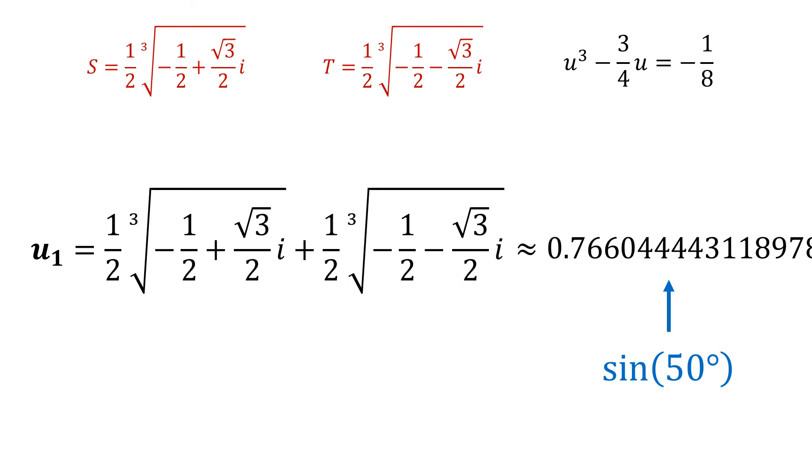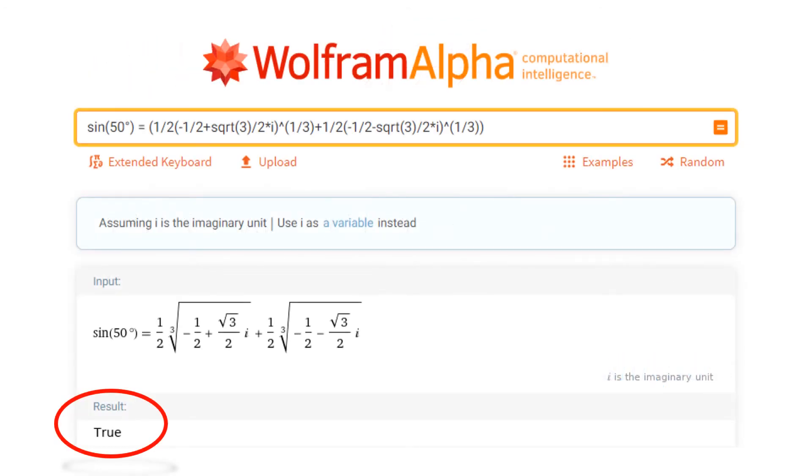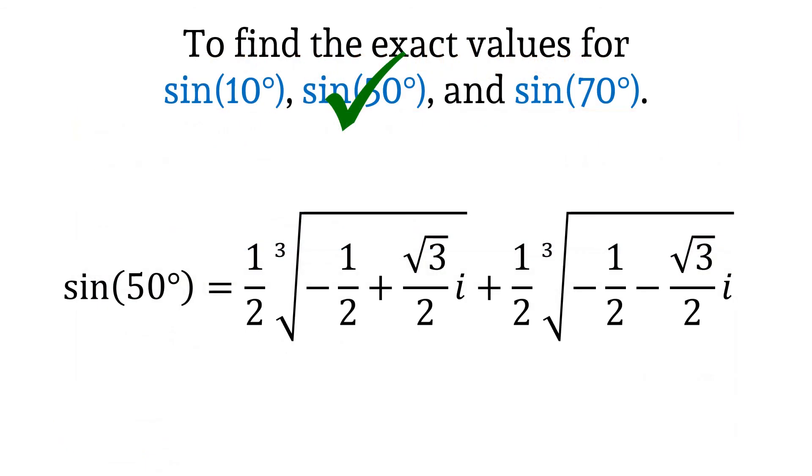Let's get a second opinion. We'll Wolfram this bad boy and see what he has to say. Yeah, that's what we like to see. So here is our first value, the sine of 50 degrees in all its splendor. Check.